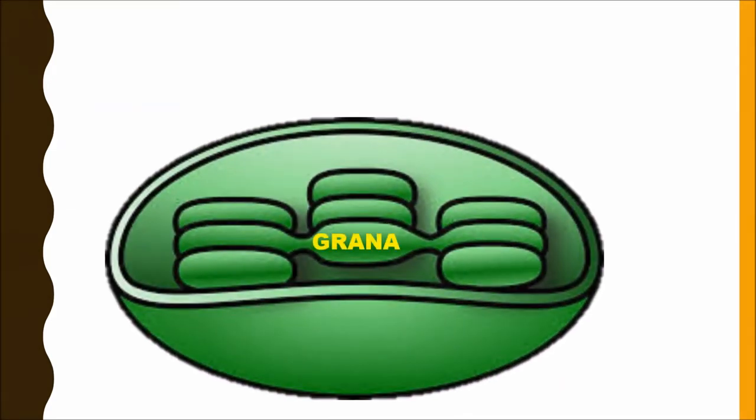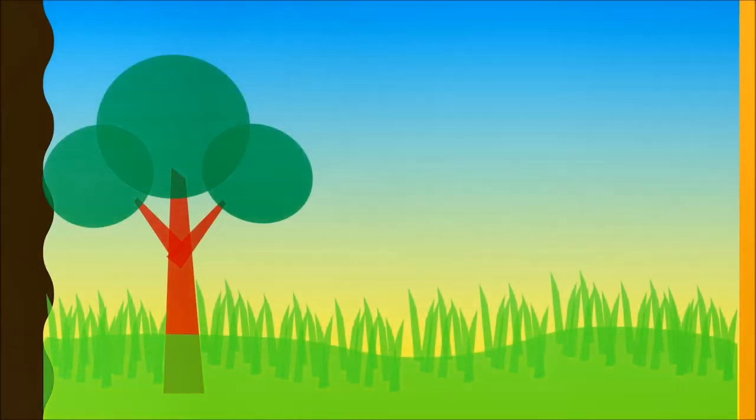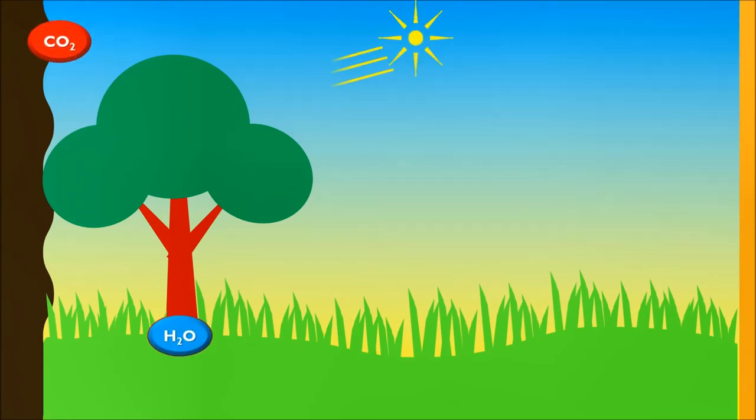The chloroplast contains grana and stroma which together bring about the process of photosynthesis. The green plants in the presence of sunlight trap the solar energy. They also take the carbon dioxide from the atmosphere and water molecules from the soil to produce glucose and oxygen.